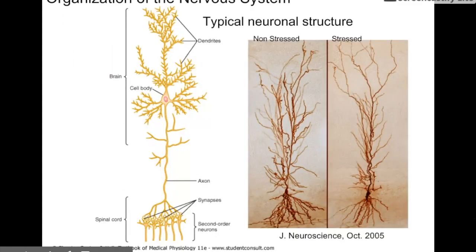I'm showing you the typical structure of a neuron. This is an experiment that took place in 2005 where they subjected some rats to a stressful environment. They built special cages for the rats that had a shock floor, so periodically the floor would zap them. That caused a lot of problems for the rats — they were very stressed out all the time. It happened at random frequency so they didn't know when they were going to get zapped.